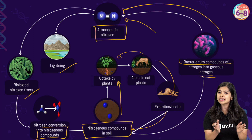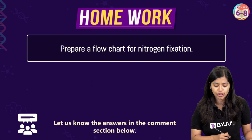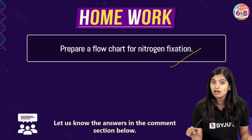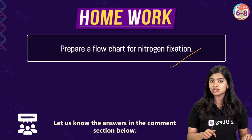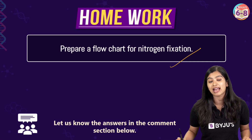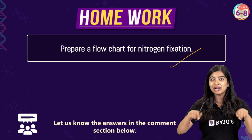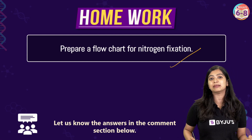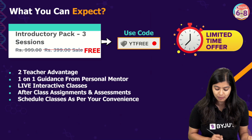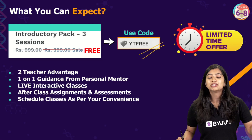I hope this concept has become clear. Here is a quick homework: prepare a flowchart of the nitrogen cycle. A Google Form link will be in the description and comment section where you can upload and send it to me. If you liked this video, let me know in the comments. Here's also a quick reminder about the Byju's mini learning program — it's a limited-time offer with the YT-free code, so do try it out.